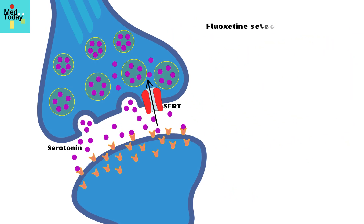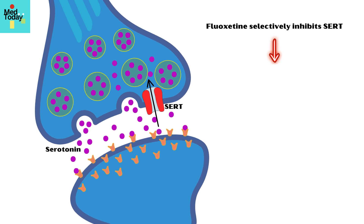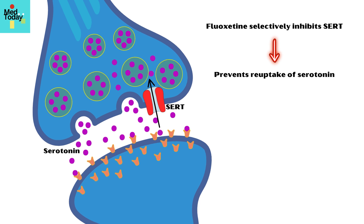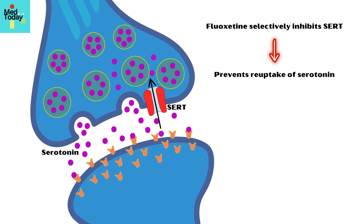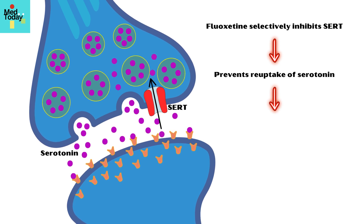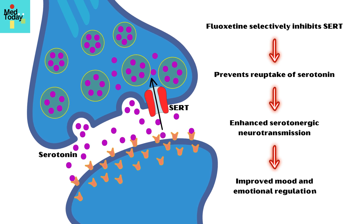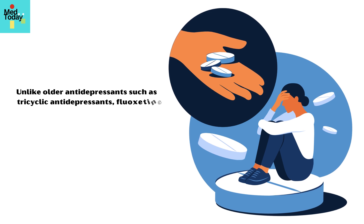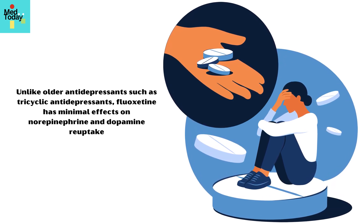Fluoxetine works by selectively inhibiting the serotonin transporter, or SERT, which prevents the reuptake of the neurotransmitter serotonin into presynaptic neurons. This action increases the levels of serotonin in the synaptic cleft, which enhances serotonergic neurotransmission, leading to improved mood and emotional regulation. Unlike older antidepressants such as tricyclic antidepressants, fluoxetine has minimal effects on norepinephrine and dopamine reuptake.